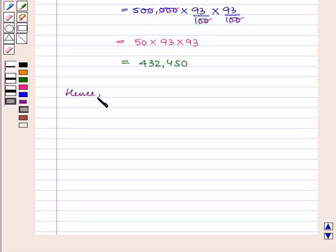Hence the population of the town after 2 years is equal to 432,450 which is our answer.